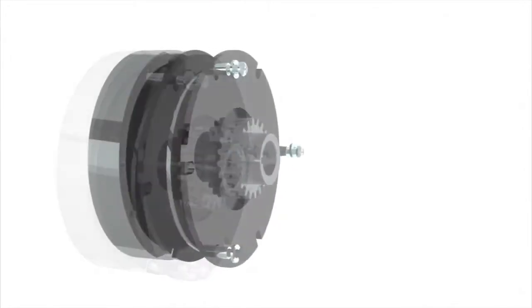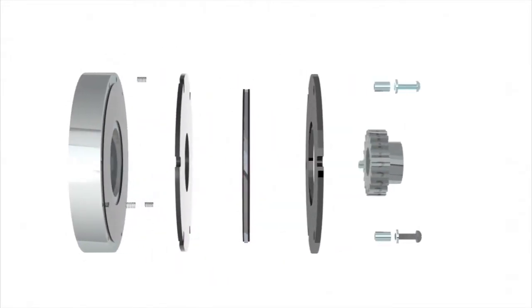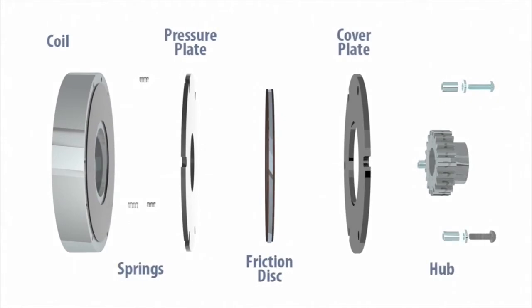The key components to the brake are the coil, springs, pressure plate, friction disc, cover plate and hub.